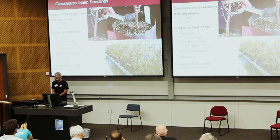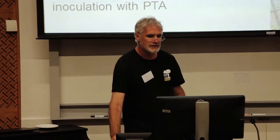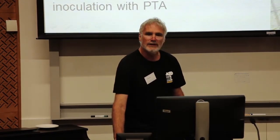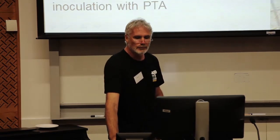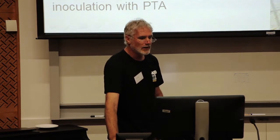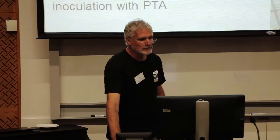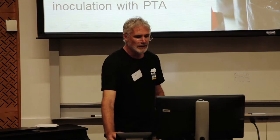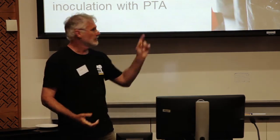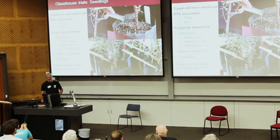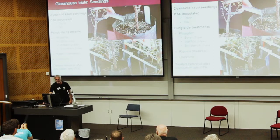We moved into trials with young kauri seedlings in the glasshouse. These seedlings were inoculated with the PTA either onto the stem — by making a small wound and adding an oat grain that had the PTA growing on it — or from pouring inoculum into the soil to infect the roots. Then we applied various phosphite treatments, either as a spray onto the canopy, an injection into the trunk, or a soil drench. We also tested another product that's been used sometimes, ceritomil, and had untreated controls. The only tricky treatment was the injection — for the smallest trees, we came up with a technique using a hypodermic needle pressurised with a very high-tech rubber band, and that worked quite well.